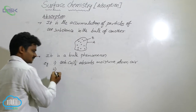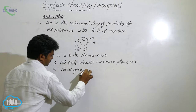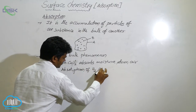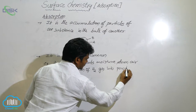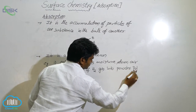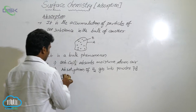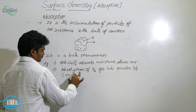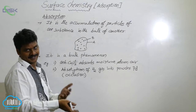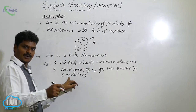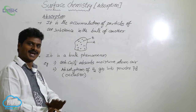The second example is absorption of H₂ gas into powdered palladium (Pd). This has a specific name — occlusion. Absorption of H₂ gas into powdered palladium is an example of occlusion. Occlusion is a type of solution — specifically a gas-in-solid type solution.